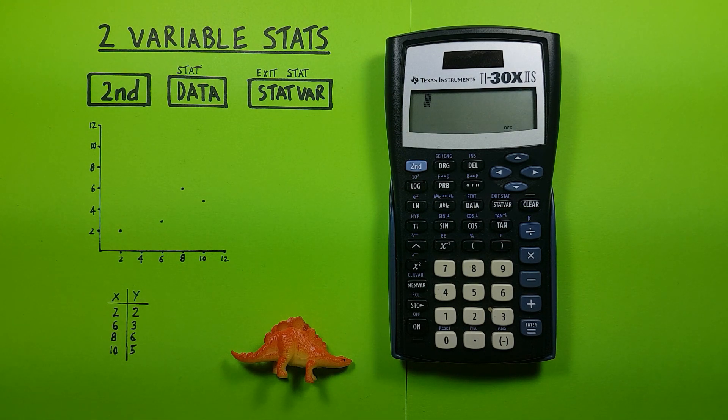Two variable statistics are typically statistics that have an x and a y coordinate and can look like they are graphed something like this.